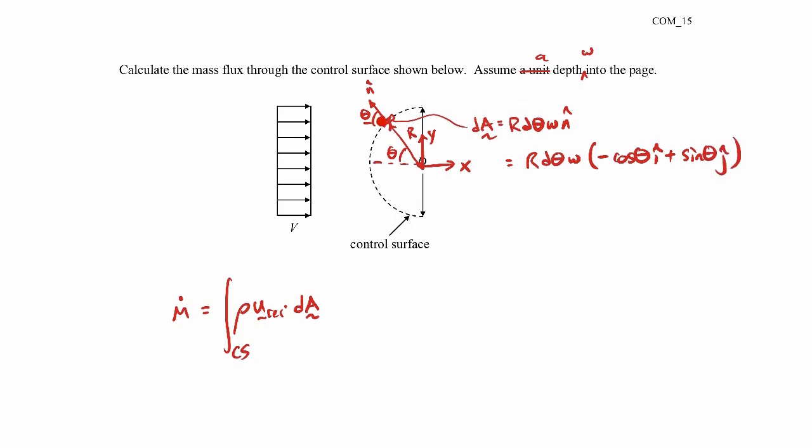So I'm just taking the horizontal component of n hat. So that'll be cosine theta. Remember, n hat's a unit vector, so it has a length of one. So it'll be a cosine theta pointing in the minus x direction, and a sine theta pointing in the positive y direction. So that's where that comes from.